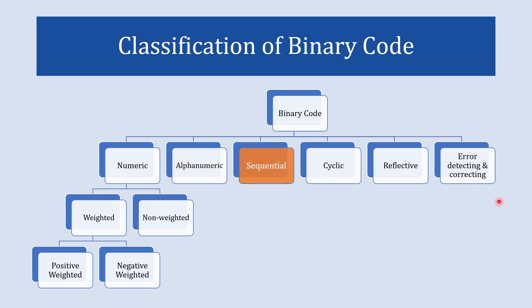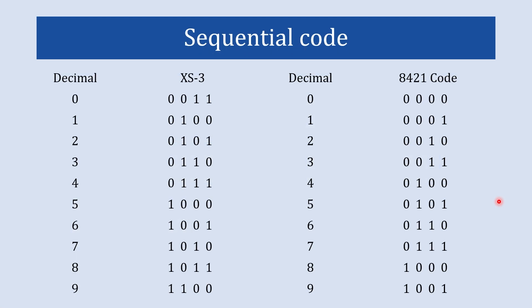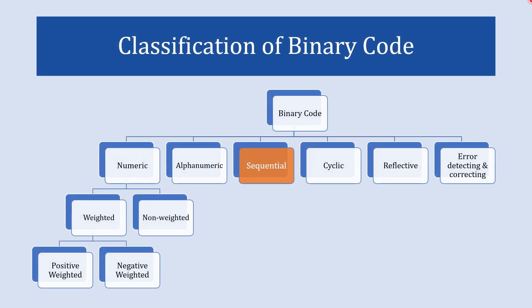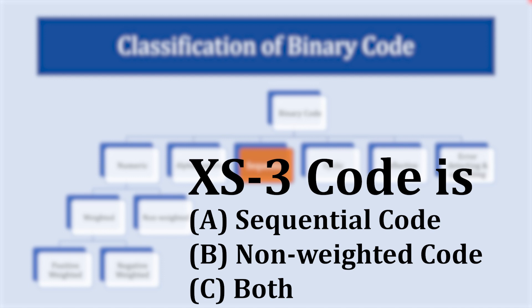Next we explore sequential codes. These codes follow a specific sequence in their arrangement — each successive code is obtained by altering just one binary digit from its preceding code, and it consistently represents an increment in numerical values. Examples of sequential codes are XS3 code and the add-3-to-1 code. Can you tell me: is XS3 code a sequential code, a non-weighted code, or both? Write your answer in the comments.